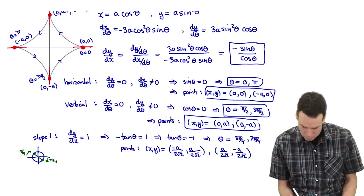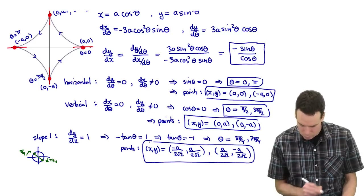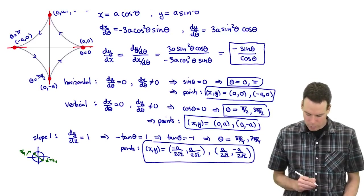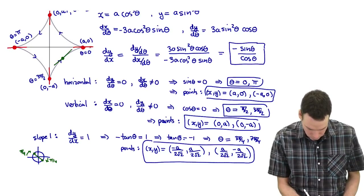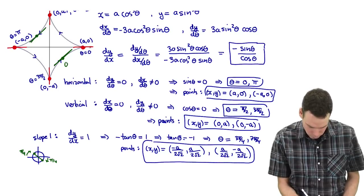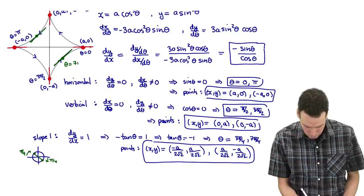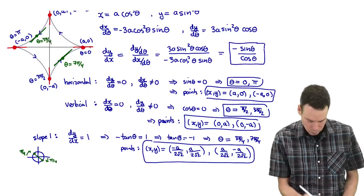Those are the points where the tangent line has slope 1. Looking at the graph: this point corresponds to theta equals 7π/4 and this one to theta equals 3π/4.